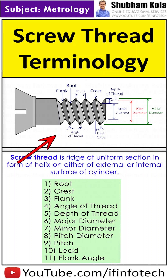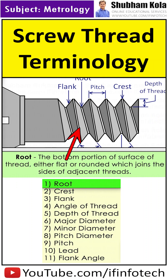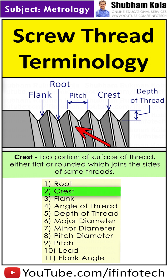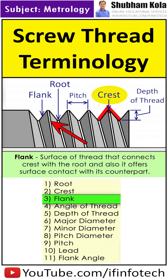Basic terms used in screw thread terminology. The root is the bottom portion or surface of a thread which joins the sides of adjacent threads. The crest is the top portion which joins the sides of the same thread. The flank is the surface of the thread that connects the crest with the root, and it also offers surface contact with its counterpart.